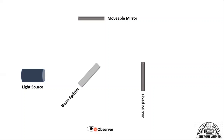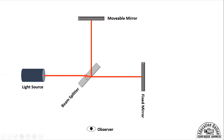The detector detects whether the combination is constructive or destructive. When the beam of light hits the beam splitter, it is divided into two parts — one is transmitted and one is reflected. Refraction also occurs as the beam passes through the transmitting material. The beam from the movable mirror passes through a medium other than air, while the beam from the fixed mirror does not pass through any additional medium, creating a path difference.